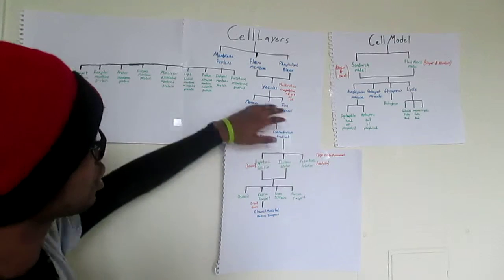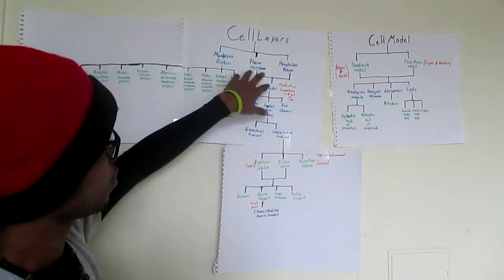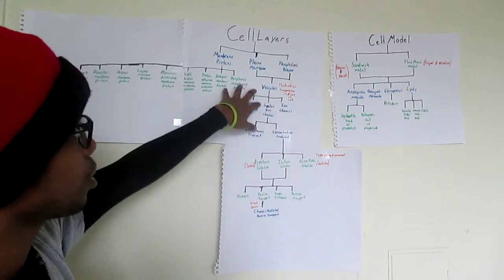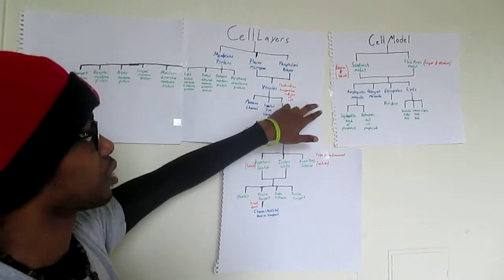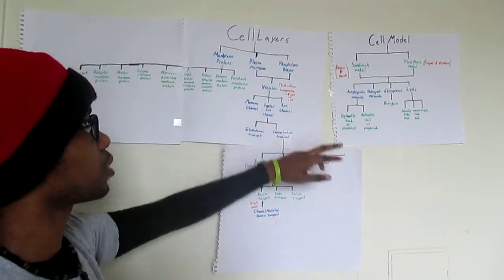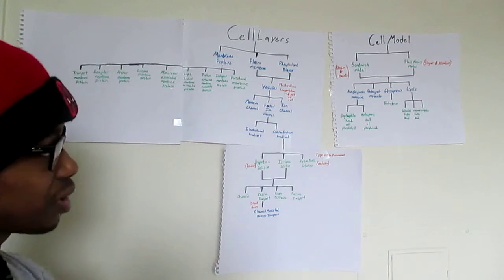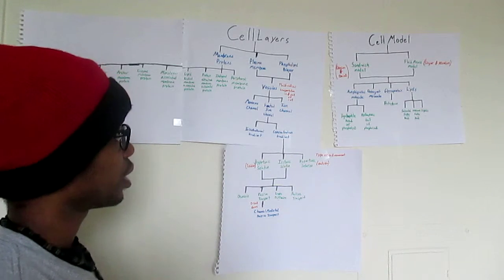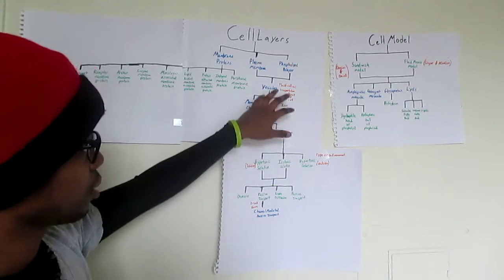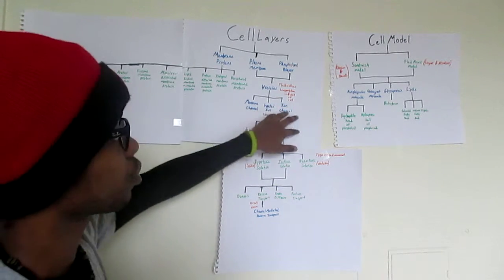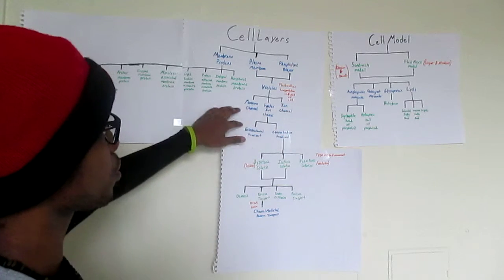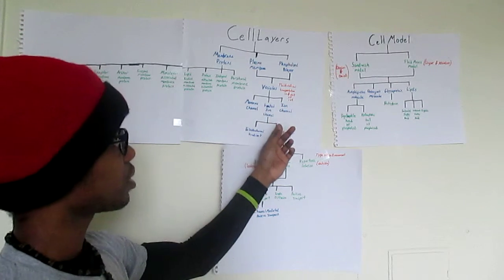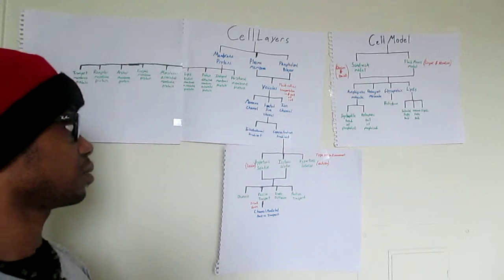Now within the plasma membrane and the phospholipid bilayer, that breaks down into the vesicles, which is the fluid cell sac of transportation in and out of the cell. The vesicle breaks down into three parts: the membrane channel, the gated ion channel, and the ion channel.